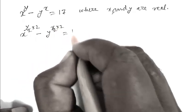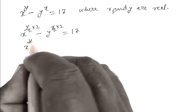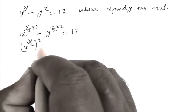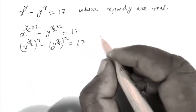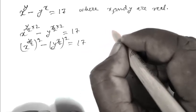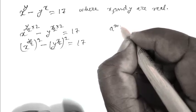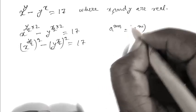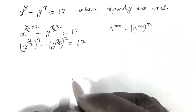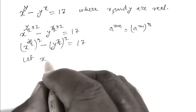Or x to the power y upon 2, whole squared, minus y to the power x upon 2, whole squared, equals 17. Here I am applying the formula: a to the power m times n equals a to the power m, whole to the power n.